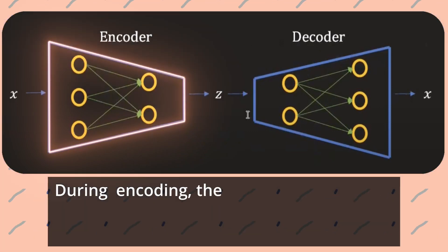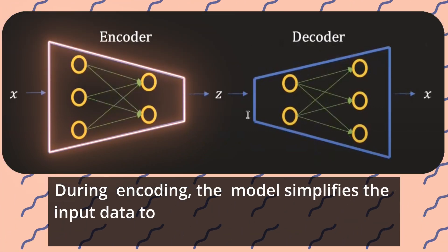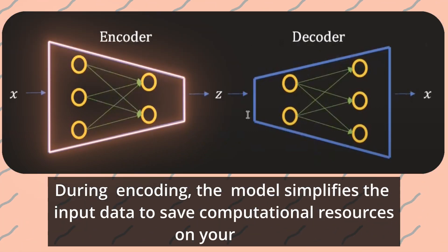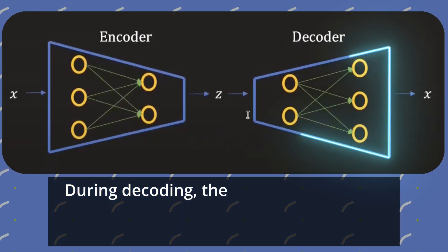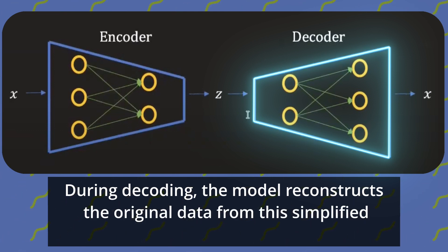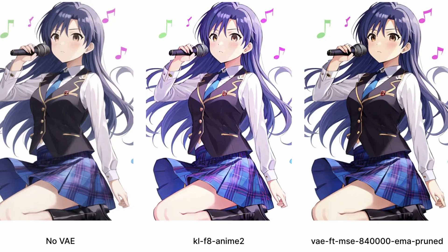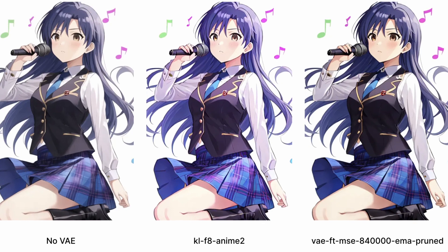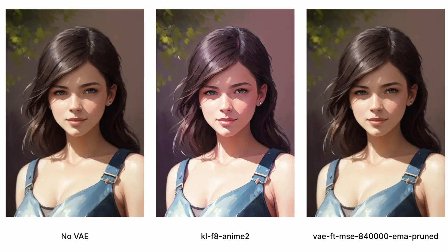During encoding, the model simplifies the input data to save computational resources on your GPU — or if you're using my notebook, Google's GPU. During decoding, the model reconstructs the original data from this simplified representation. Of course, there might be some loss of information during the reconstruction process. If there was limited anime data in the dataset, the decoded result in the anime style may suffer.